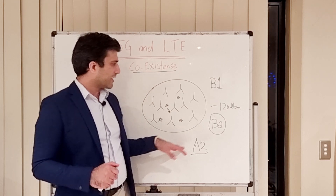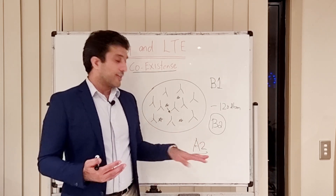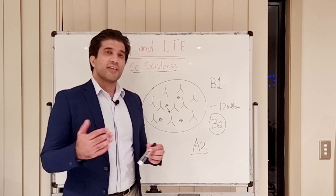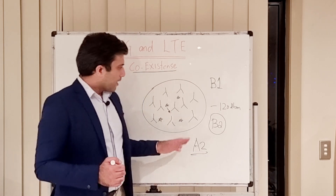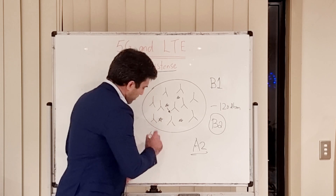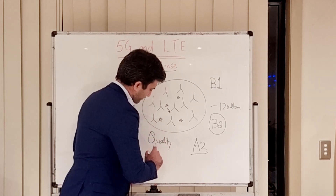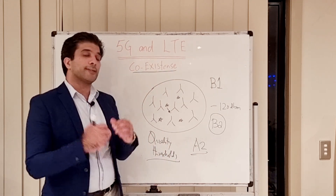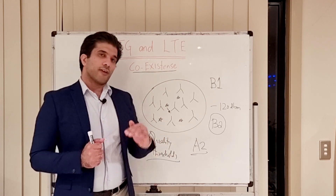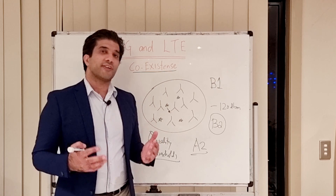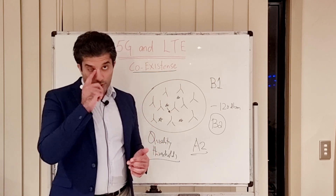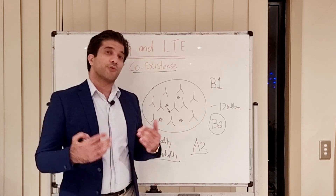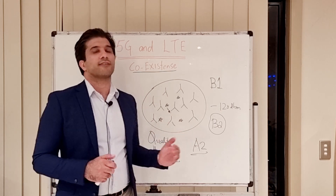Another aspect is setting A2 and B2 too low — your connection will be dragged into very poor radio conditions. Apart from A2 and B2, there are also quality thresholds. These cover situations where RSRP is not going low but interference or other issues degrade signal quality. These quality thresholds exist for NR legs as well, so you can remove the NR leg based on the quality of that radio link.